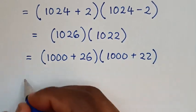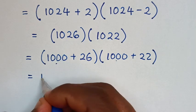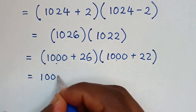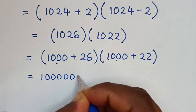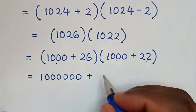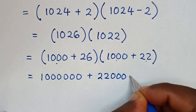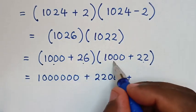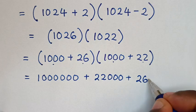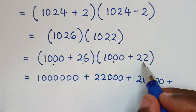So it will be equal to, we multiply now. 1000 times 1000 is 1 million. Then plus 1000 times 22 is 22,000, plus 26 times 1000 is 26,000, plus 26 times 22.